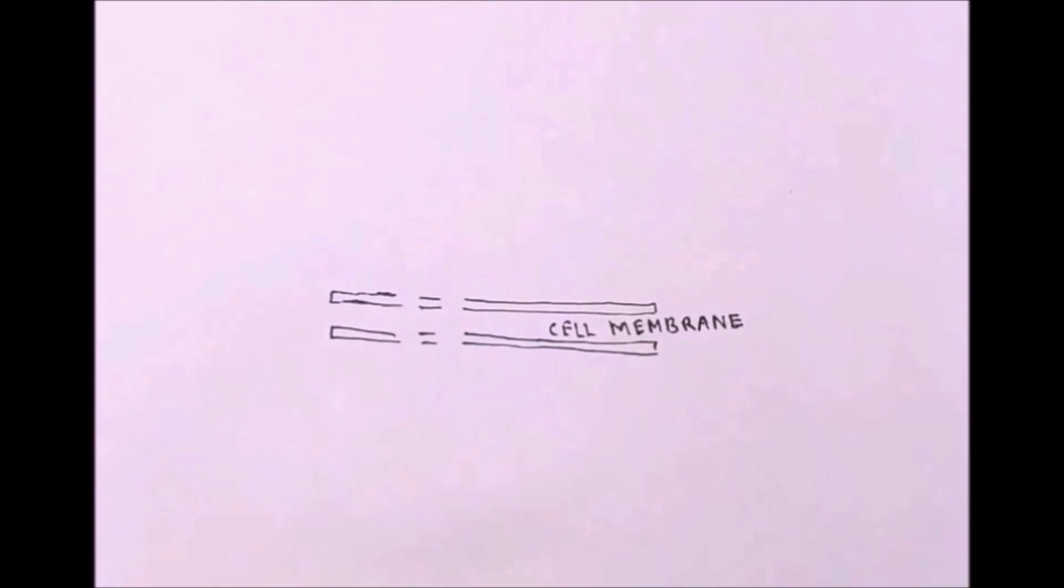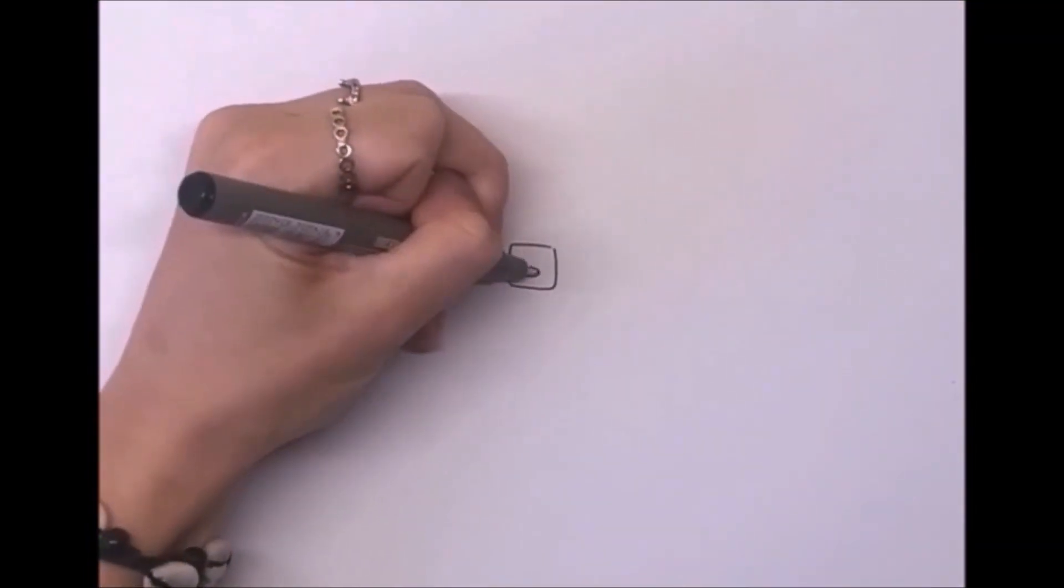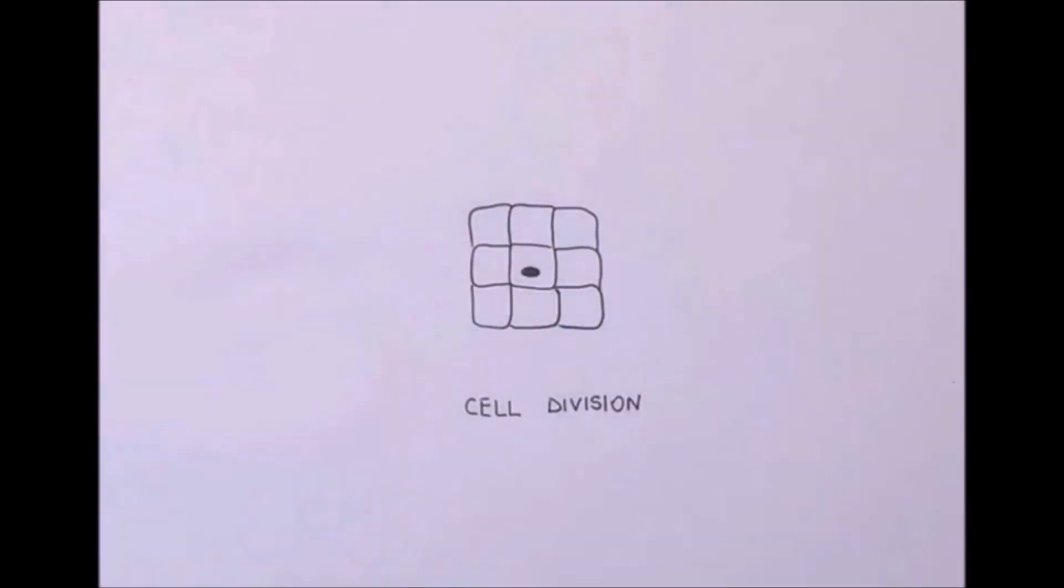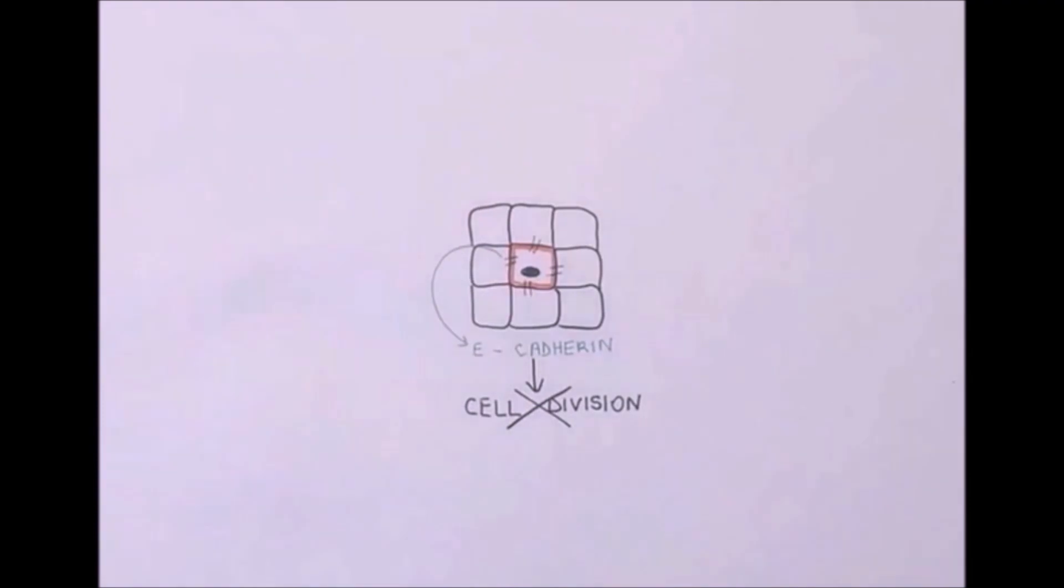E-cadherin is a protein present in adherence junctions, and it is an oncosuppressor, because it counteracts uncontrolled cell growth. Since E-cadherin is needed for the cell to remain attached to the surrounding ones, the presence of this molecule tells the cell that there is no further space for the cell to expand. Therefore, mitosis cannot occur.